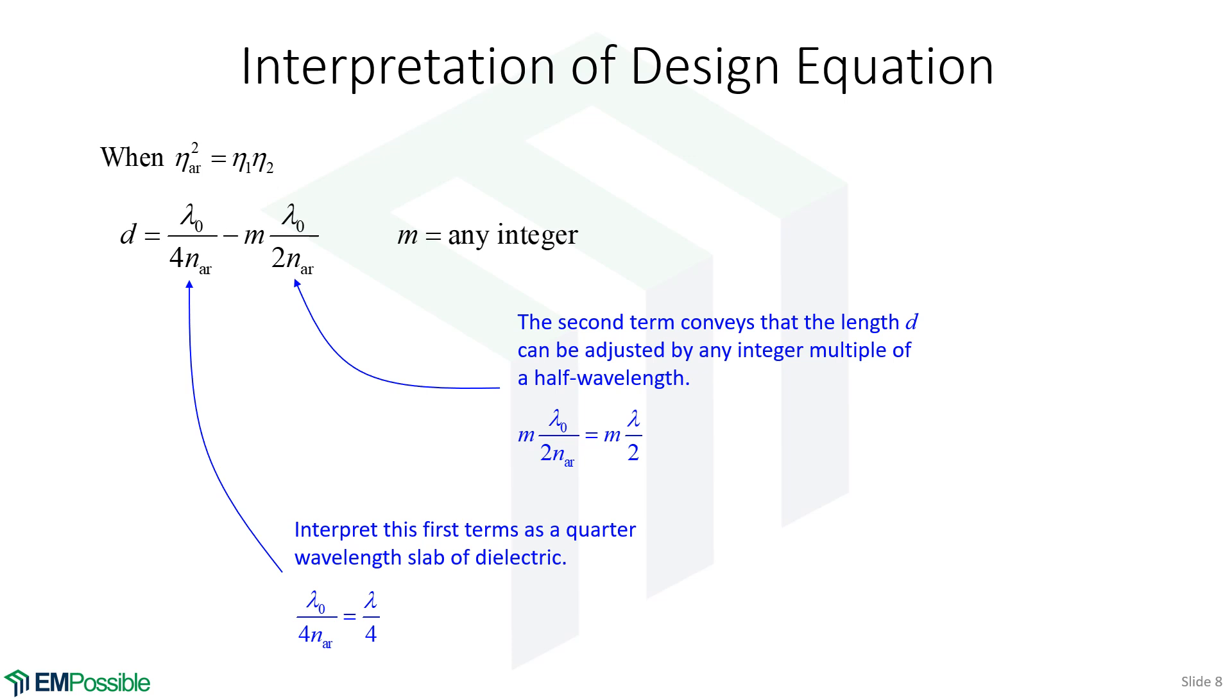Now, in practicality, we can't really set this to be negative, something really large, because we'll get negative thicknesses. And so this really just needs to be a positive number. Mathematically, it can be negative, but physically, we can't make the D negative. So we're really only looking at M equals 0 and positive numbers from there.